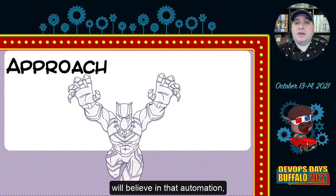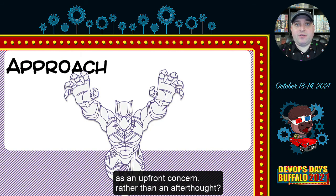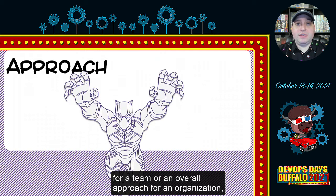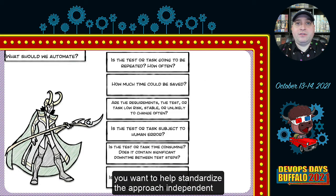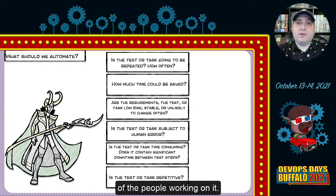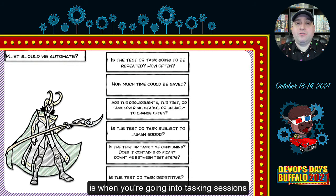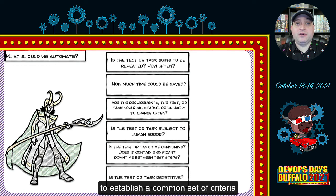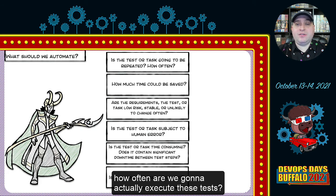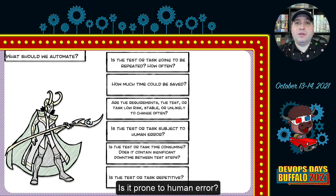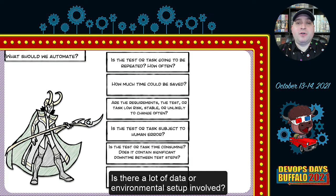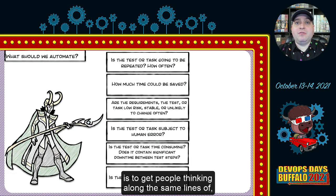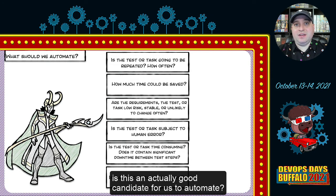When implementing a test automation framework, you want to standardize the approach independent of the people working on it. During tasking or refinement sessions, work with the team to establish a common set of criteria to determine whether to automate something — questions like: how often will we actually execute these tests? What is the time savings proposition? Is it prone to human error? Is there a lot of data or environmental setup involved?